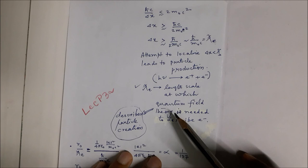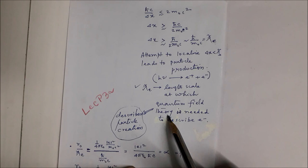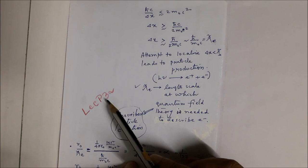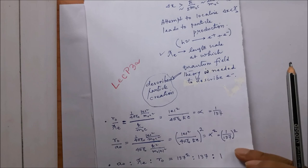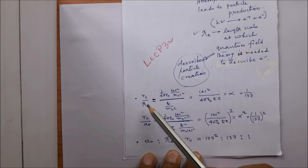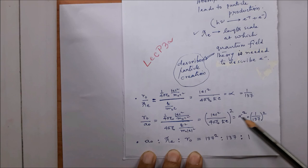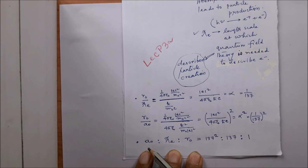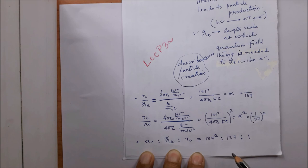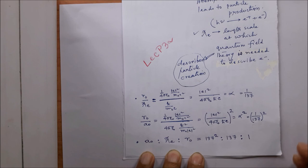Below the reduced Compton wavelength we need other theories like quantum field theory, as described in lecture P3A. In summary, we have compared the various electron-related lengths: the ratio of classical electron radius to reduced Compton wavelength of the electron equals alpha (1/137), while the ratio of classical electron radius to the Bohr radius equals alpha-squared. This means the largest is the Bohr radius, next is the reduced Compton wavelength, and the classical electron radius is the least among these three.